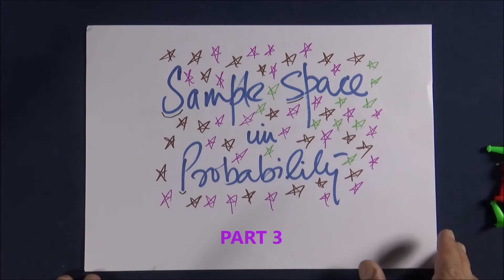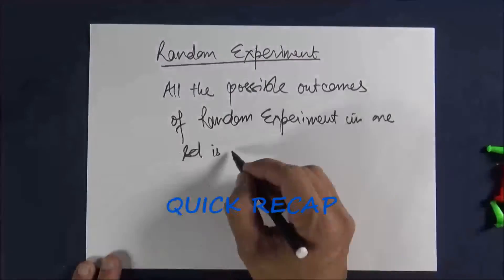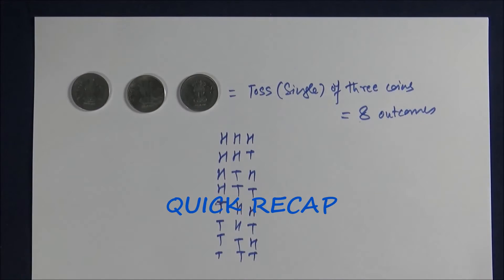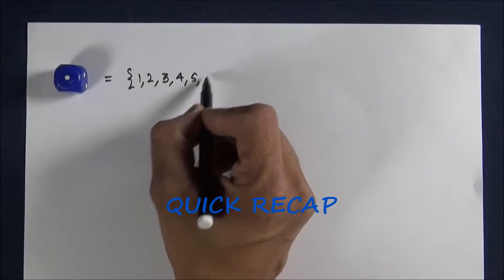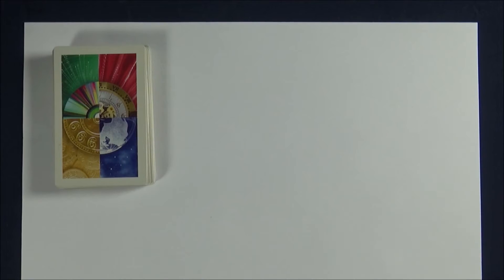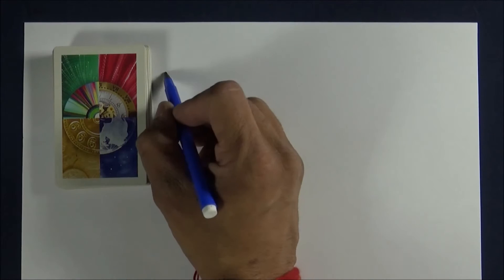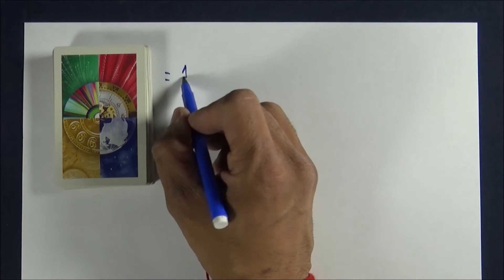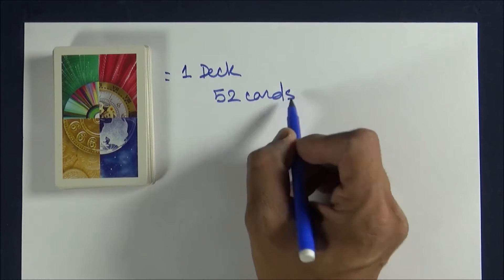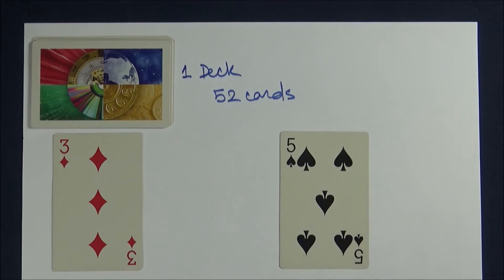Sample Space in Probability. Now I'll take you to playing cards. In one set of playing cards, which is called one deck, there are 52 cards. 26 cards are red and 26 cards symmetrically are black.